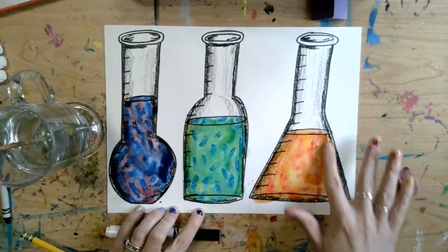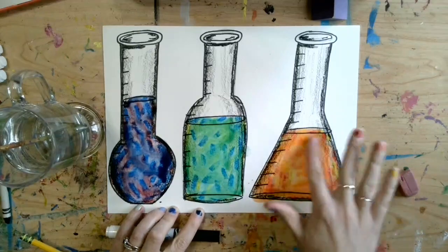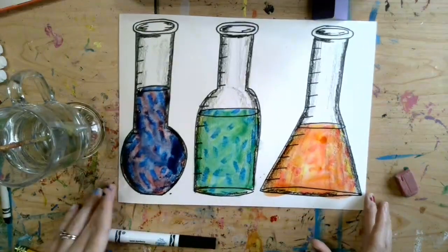So when this is dry, if you want to go outline your beaker, you can go back with a Crayola marker to outline. Or you could even use just the crayon to outline. That would work too.